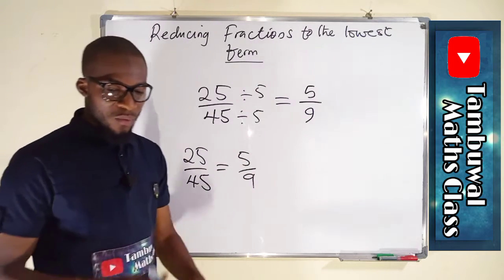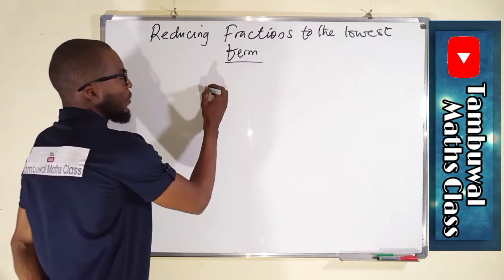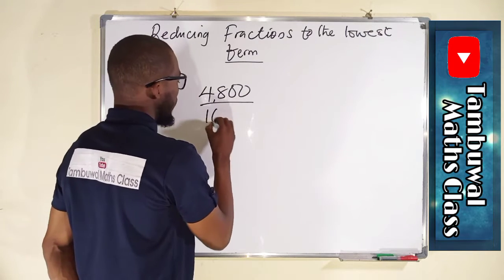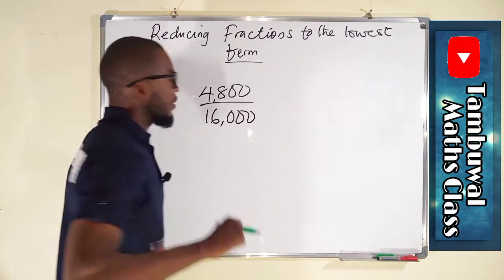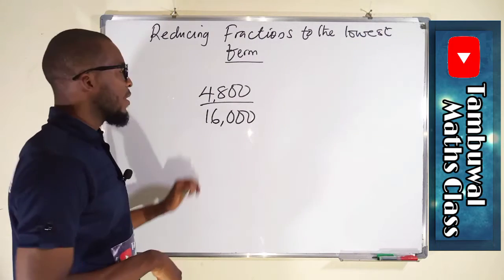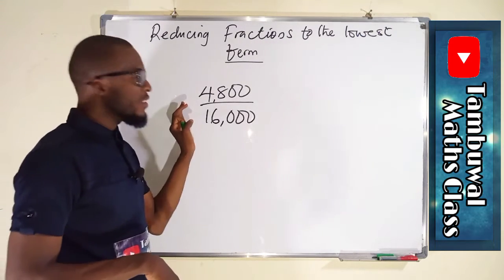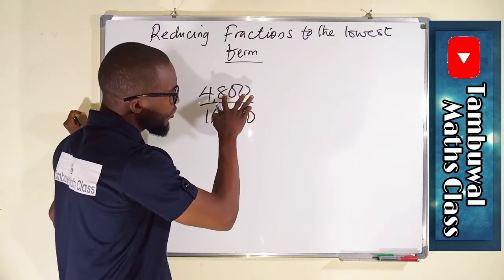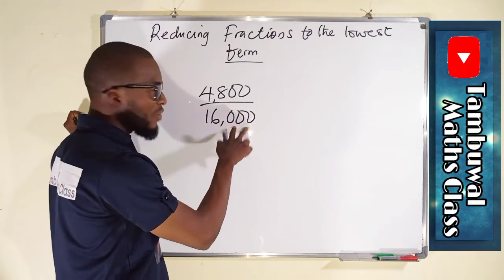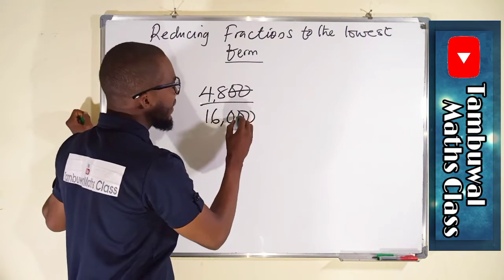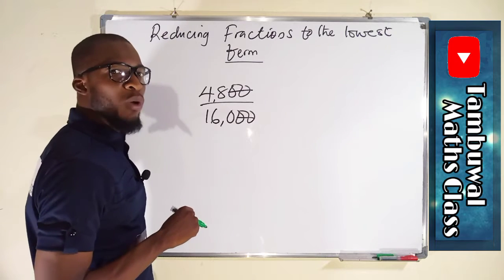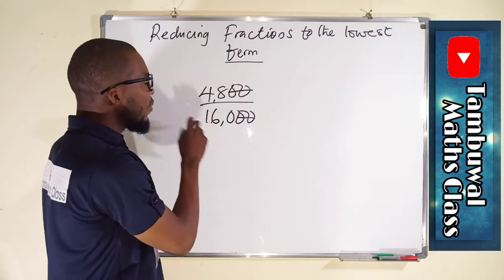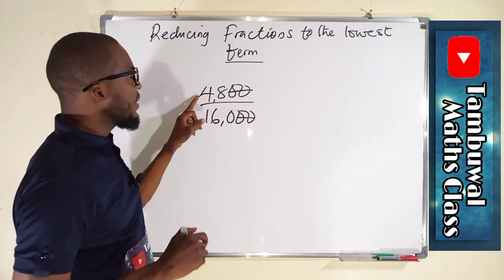Let us take one more: 4800 divided by 16000. We want to reduce this to its lowest term. The numerator has two zeros at the end and the denominator has three zeros — the two zeros in the numerator cancel two zeros in the denominator, so if we divide both by 100 we are left with 48 over 160.